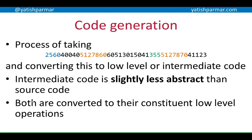Code generation doesn't always produce machine-executable code directly — you might generate intermediate code which is then turned into machine code later on. It's easier to optimize intermediate code. The lexer and syntax analysis stage can be considered the front end, generating intermediate code, while compiling that down to a particular CPU architecture is the back end. The advantage of intermediate code is that it makes your source code portable across different architectures.